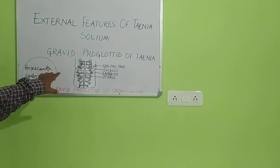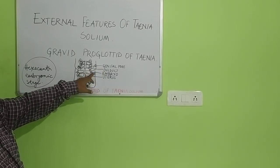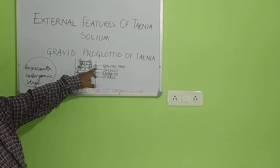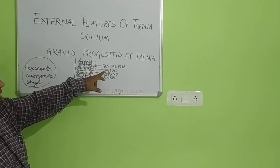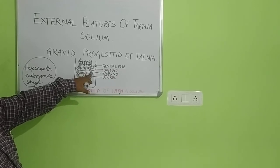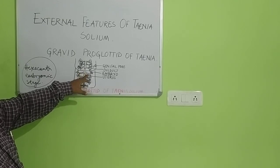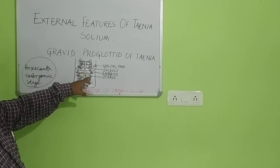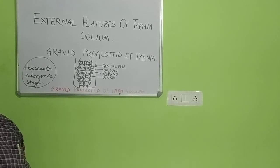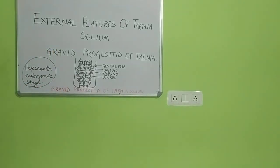In the diagram you find the genital pore which opens to the outside. There you find the oviduct which allows elimination of eggs to the external side. Then you find the embryo, which is laden within the sacs generally formed from the uterus. The uterus becomes branching there, and this view you find in the gravid proglottids.